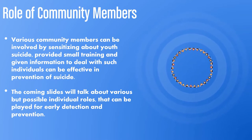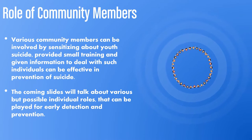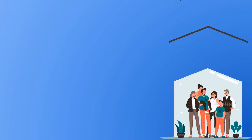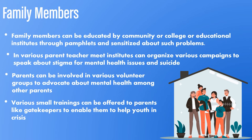The coming slides will talk about various possible individual roles that can be played for early detection and prevention. Family members can be educated by community, college, or educational institutes through pamphlets or sensitized about such problems. In various parent-teacher meets, institutes can organize campaigns to speak about stigma for mental health issues and suicide. Parents can be involved in volunteer groups to advocate about mental health among other parents. Various small trainings can be offered to parents as gatekeepers to enable them to help youth in crisis.